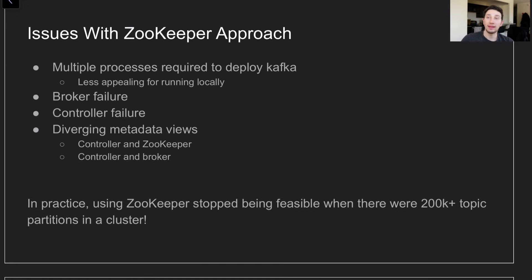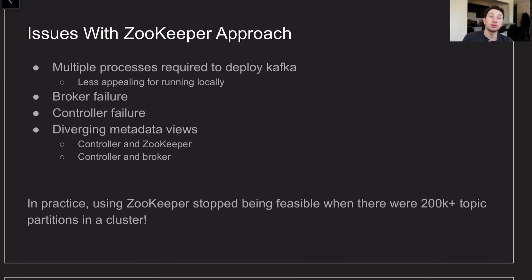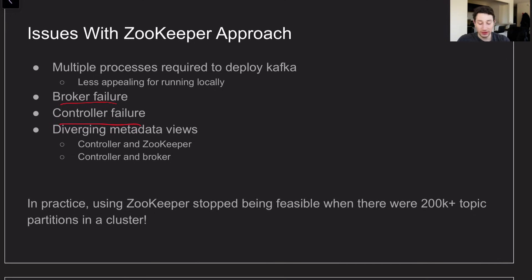There are a few different issues with using a controller that basically proxies everything to ZooKeeper. For starters, we now have to have a second process in our distributed system. This is going to be a lot less appealing for developers working with small systems or trying to test things out. If you're a small company that doesn't need to scale, you now have to run multiple processes — it becomes a more involved process, maybe getting Docker involved rather than just running locally on your JVM. They wanted to move towards a single process approach, and this also makes dealing with version control a lot easier. Broker failures are also pretty complex in this ZooKeeper and controller combo, and controller failures are very complex as well — we'll talk about those in the next slides.